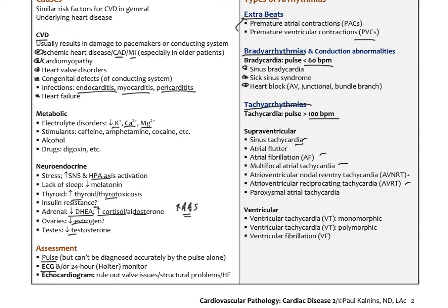Ventricular arrhythmias are much more severe because they affect the major pumping chambers of the heart. This includes ventricular tachycardia — either monomorphic or polymorphic — and then ventricular fibrillation, which will quickly degenerate into asystole unless a person is defibrillated. When we use a defibrillator with CPR, these patients are in ventricular fibrillation, and defibrillation hopefully returns them to a normal rhythm.